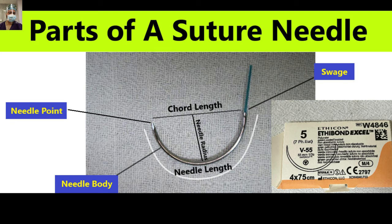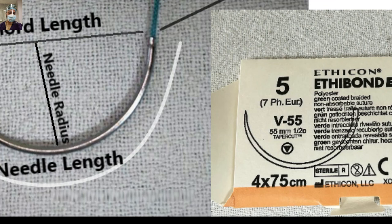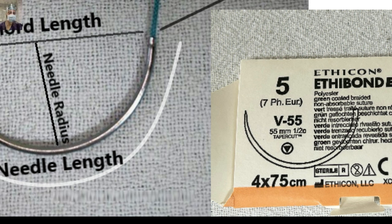Needle radius is the straight perpendicular distance, and needle length is basically the total length of the curve. On this leaflet of the needle — the same needle depicted here — there are different characteristics. The length given is 55 mm, which is the total length of the shaft. It is a taper cut; this triangle inside the circle is a triangular cut. The body and needle point is a swage end.